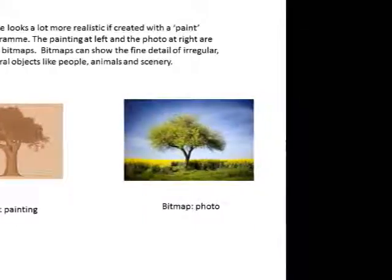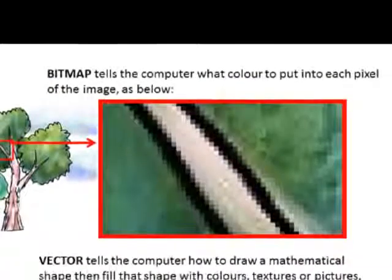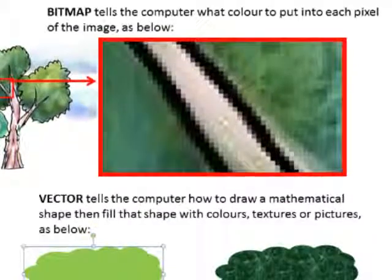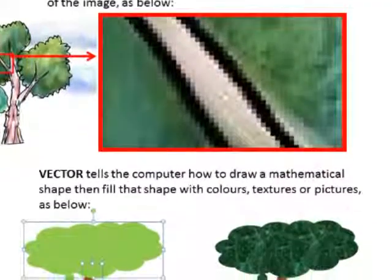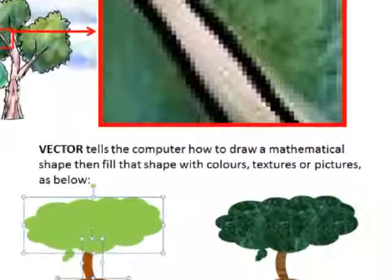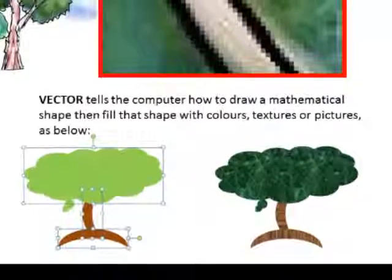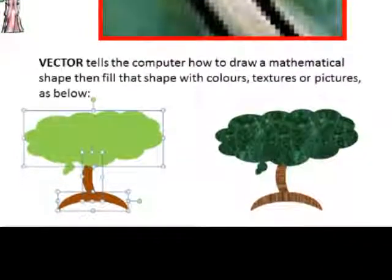Animals and scenery. A bitmap tells the computer what color to put into each pixel of the image, as you see here. A vector tells the computer how to draw a mathematical shape, then fill that shape with colors, textures, or pictures, as seen here.